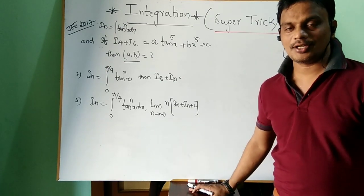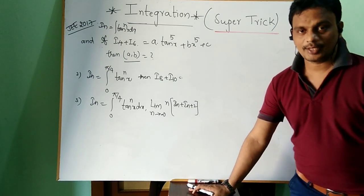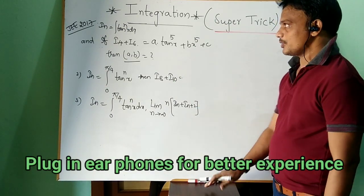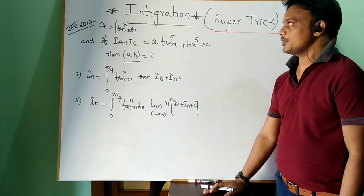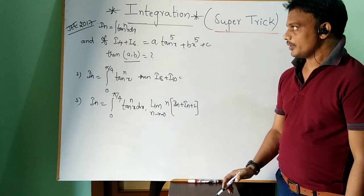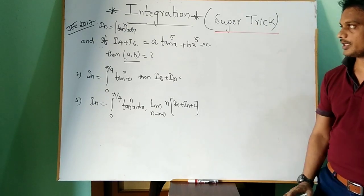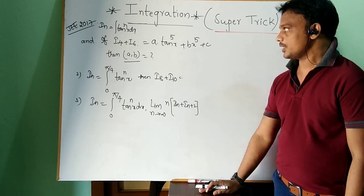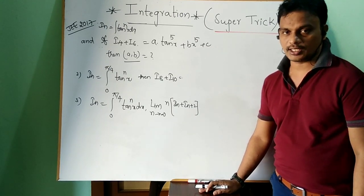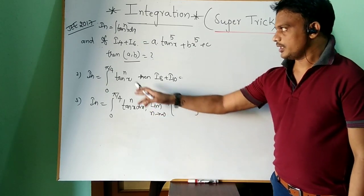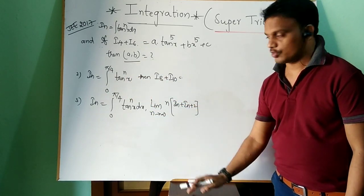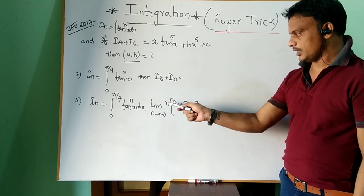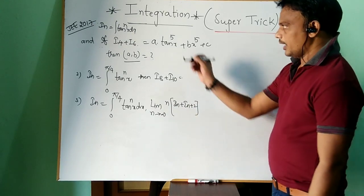Good morning students, welcome to my channel. Today I give you a super trick from integration. We will see this type of problem from JEE 2017: given i_n = integral of tan^n(x) dx, and i4 + i6 = a·tan^5(x) + b·x^5 + c, find the values of a and b. The same model also appears with limits 0 to π/4 asking for i8 + i10, and another variant with limit n to infinity of n·(i_n + i_{n+2}).